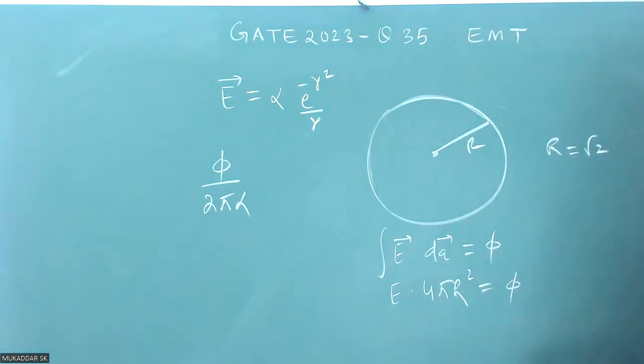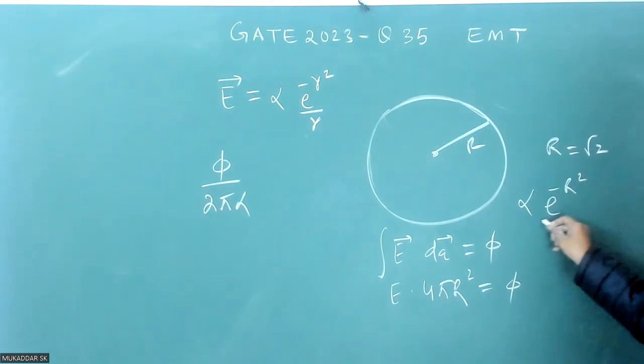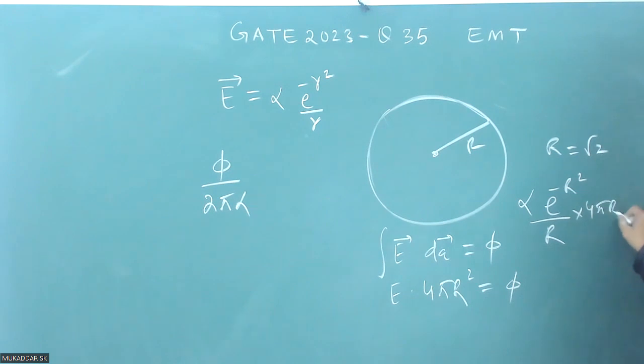Next step, E will be alpha e to the power minus R square by R into 4 pi R square is equal to phi.